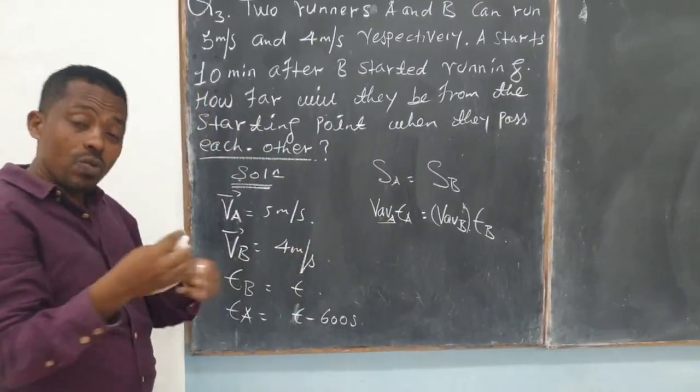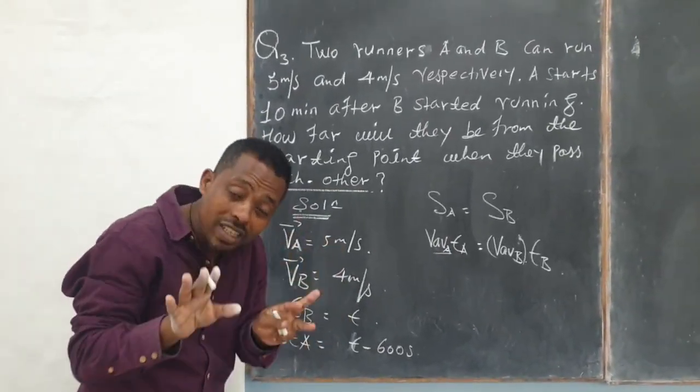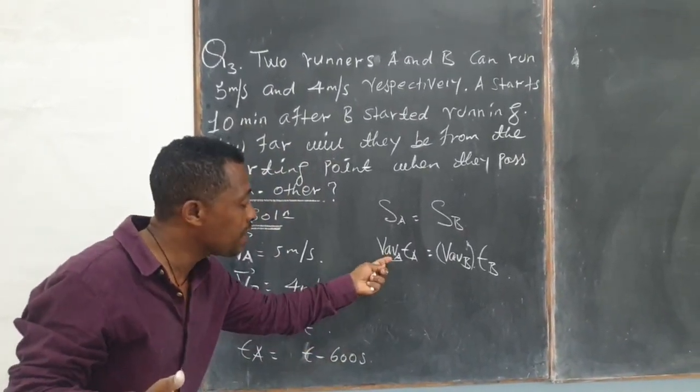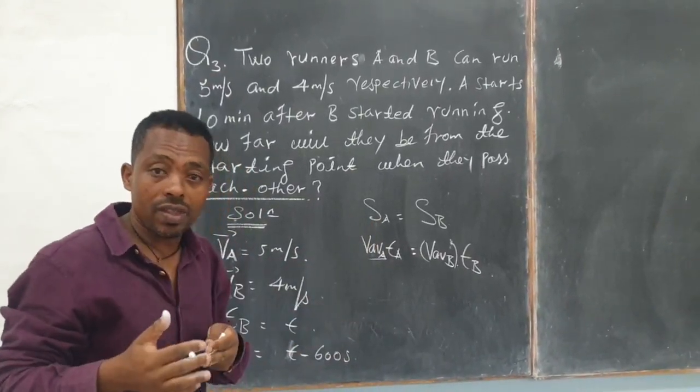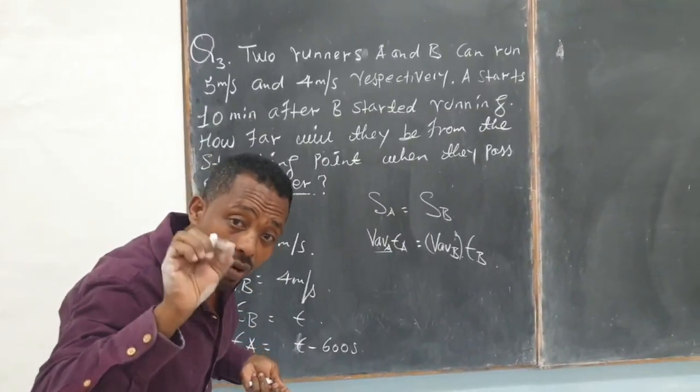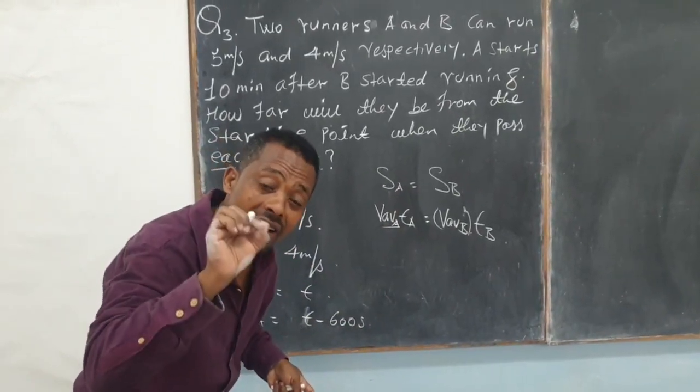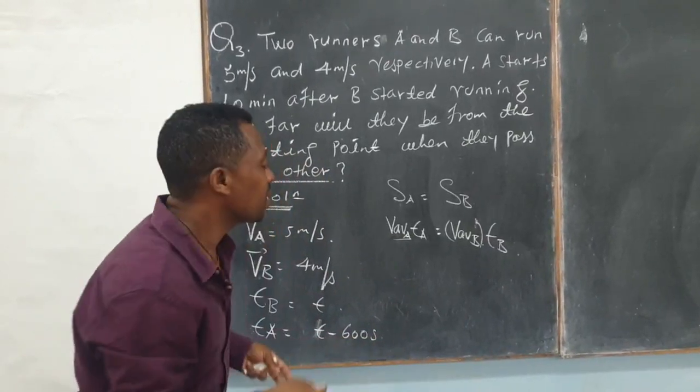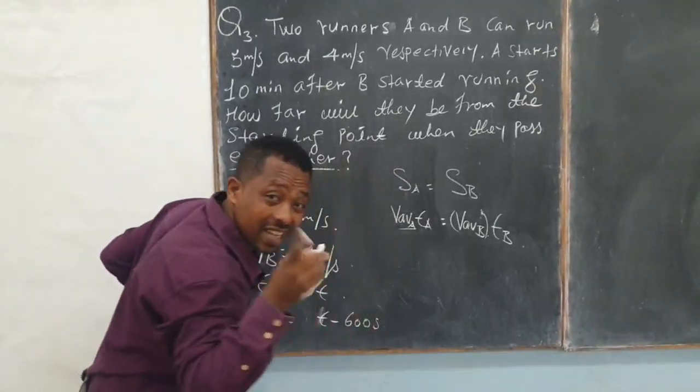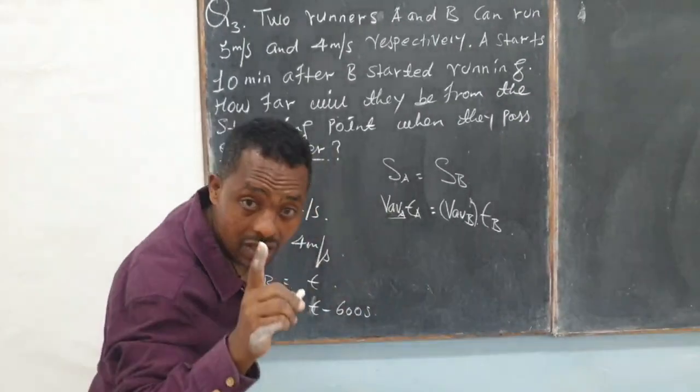But look, already we discussed this is a constant velocity. This velocity is constant throughout the entire displacement, which means the average velocity of runner A is 5 m per second. The instantaneous velocity of runner A is same as average velocity. Therefore, take just 5 m per second as average velocity.